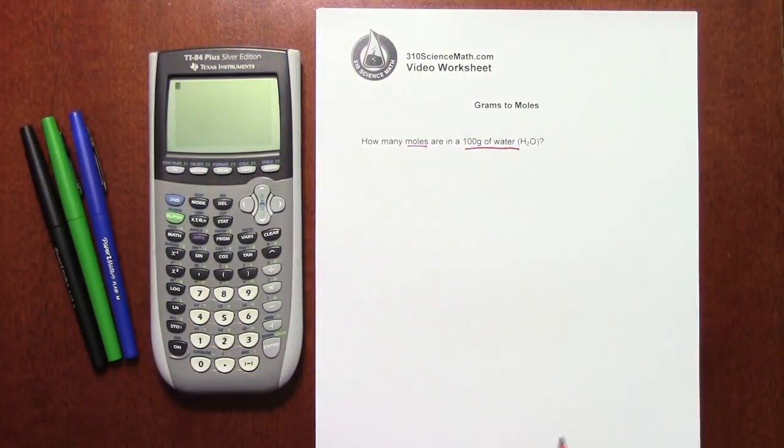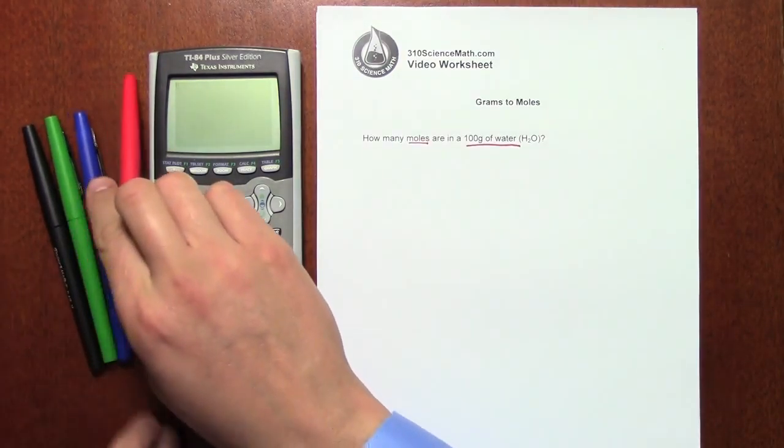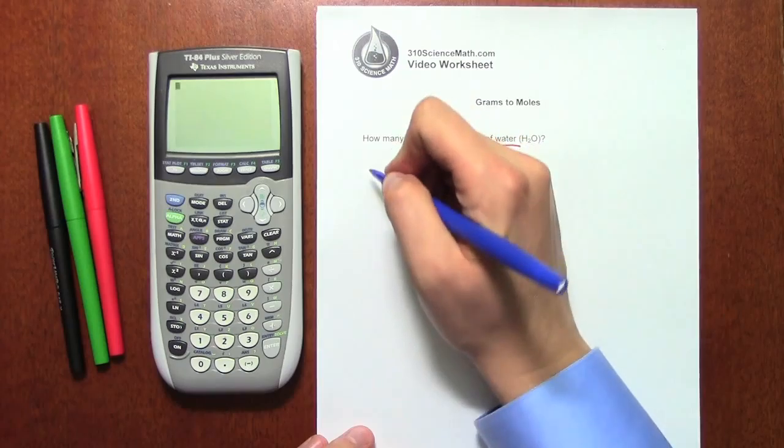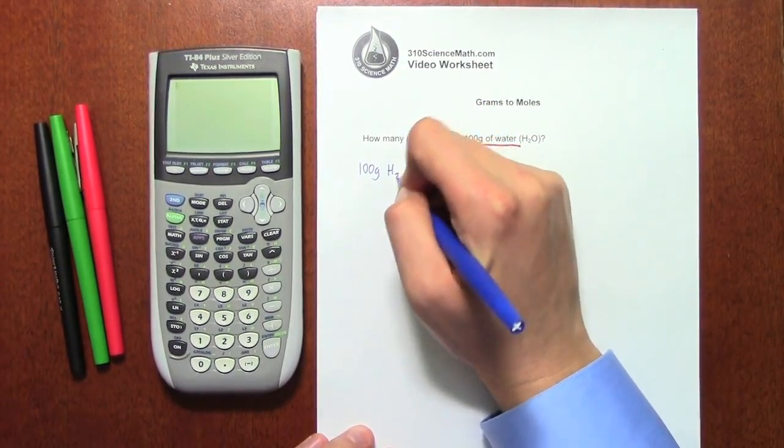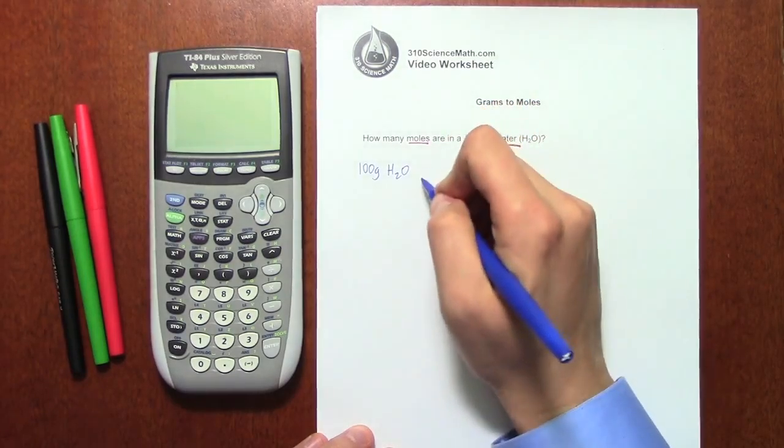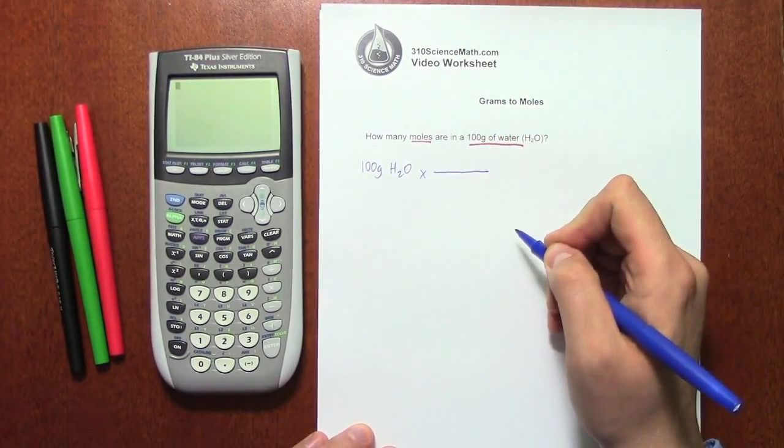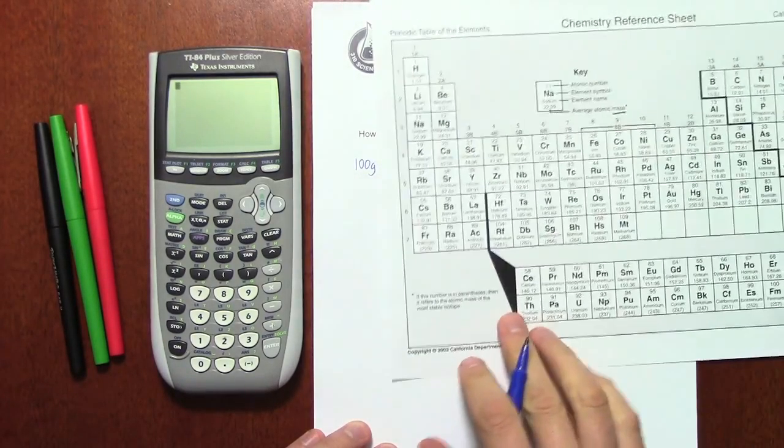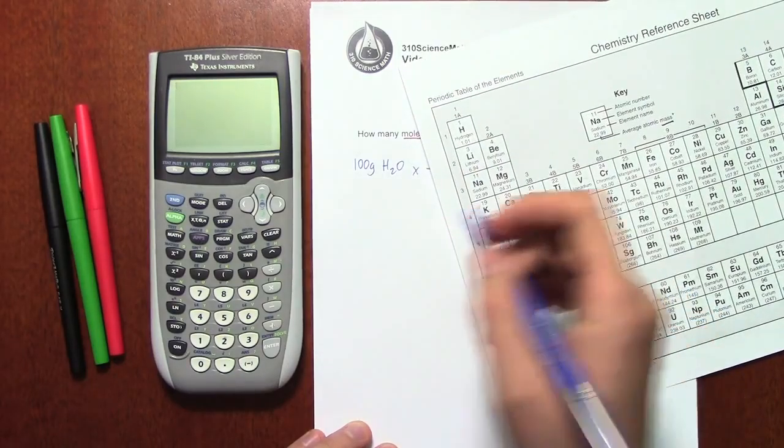So for right now, what I want to do is solve this in two ways. I'm going to start with the dimensional analysis style, which tends to be more popular among chemistry teachers. So here's 100 grams of H2O, and that's what we're starting with. Now, in order to go from grams to moles, we need a conversion factor that's going to do that. So we have to look up grams on the periodic table and kind of do a little mini problem in order to figure out what the mass of water is.